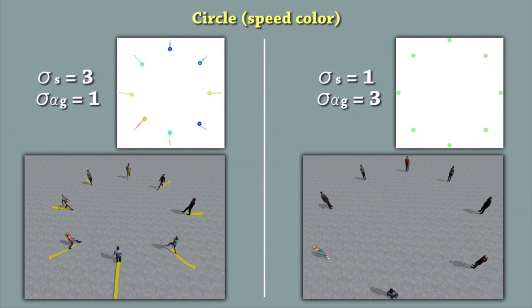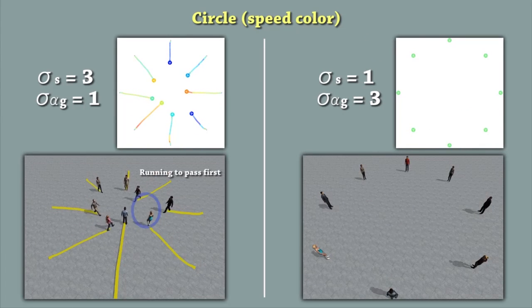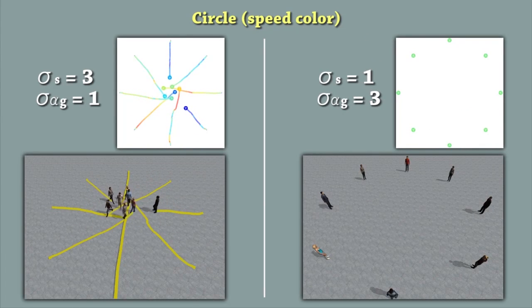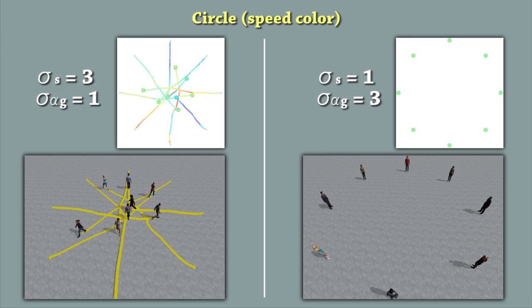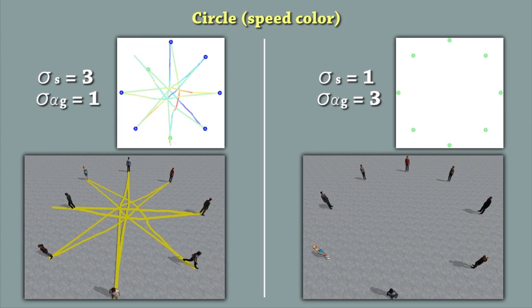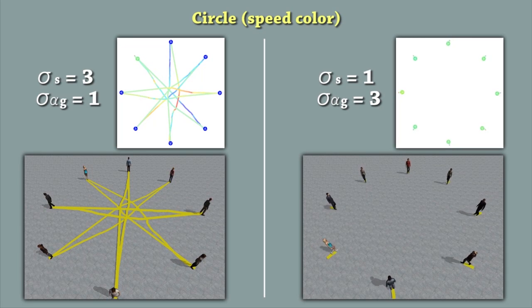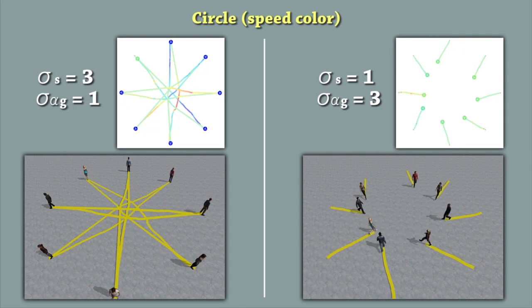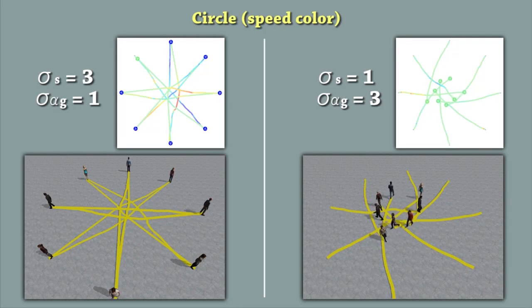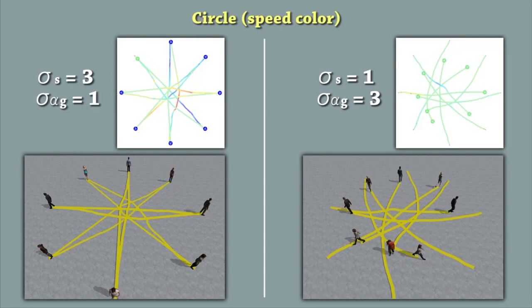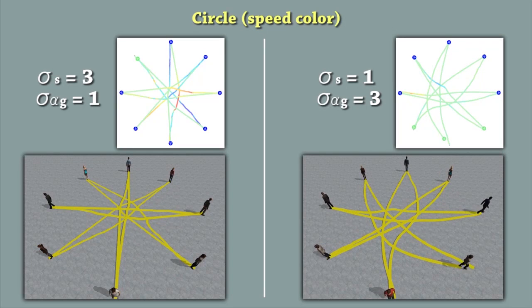On the left, the parameter setting makes the agents prefer to adapt speed over orientation. Consequently, the trajectories generated show important speed variations and no big turns. On the right, the parameter setting makes the agents prefer to adapt orientation over speed. This results in big turns and little speed adaptation. Actually, they move most of the time at their comfort speed.